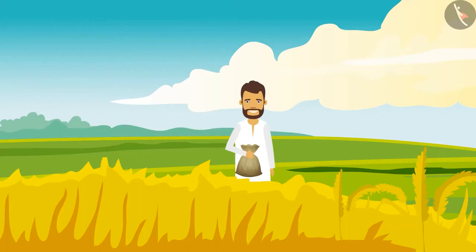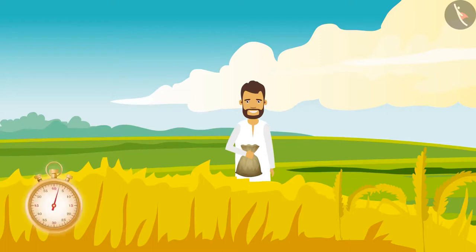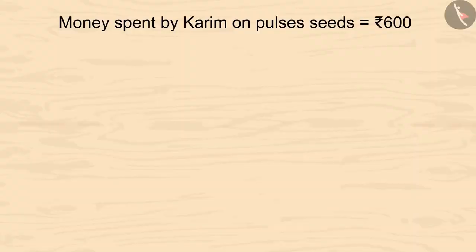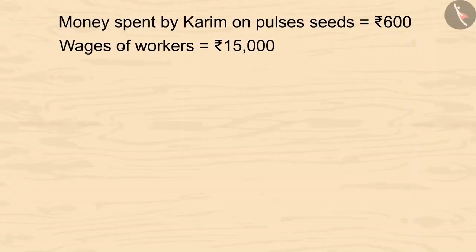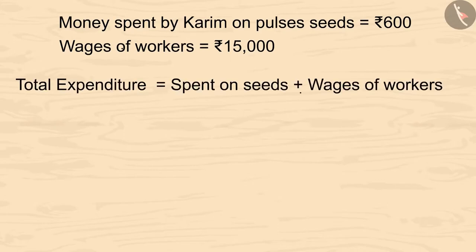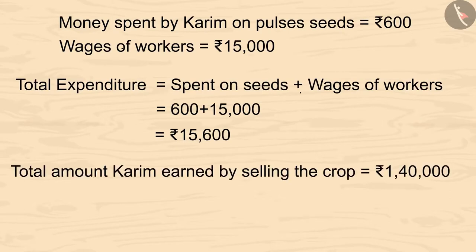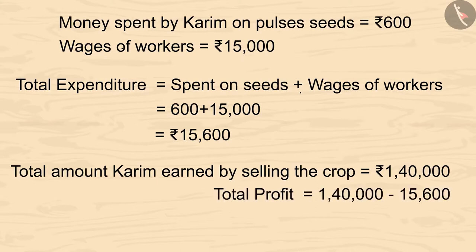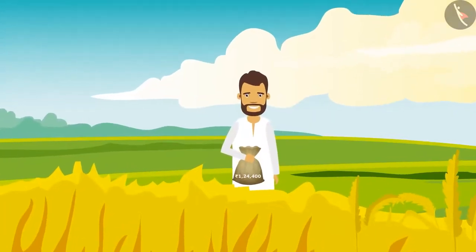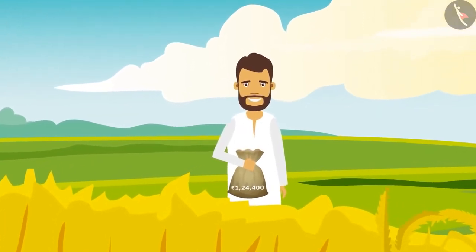Now let's see how much profit Karim has gained. Kids, you can pause the video and calculate it. He bought pulses seeds for 600 rupees and gave 15 thousand rupees to the workers. On adding both the amounts, we get 15 thousand and 600 rupees. Karim got 1 lakh 40 thousand rupees on selling the crop. If we subtract 15 thousand 600 from 1 lakh 40 thousand, we will be left with 1 lakh 24 thousand and 400 rupees. So kids, Karim has clearly made a profit of 1 lakh 24 thousand and 400 rupees.